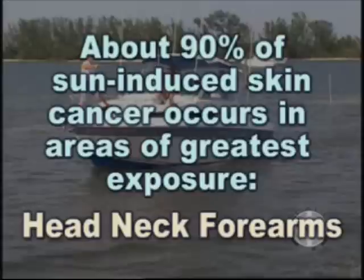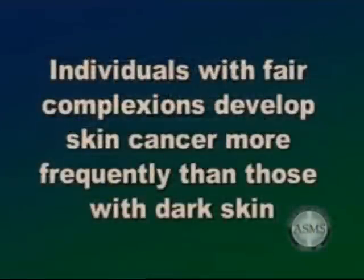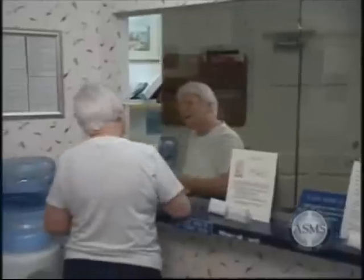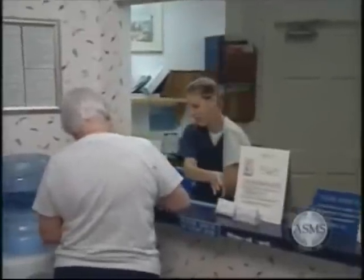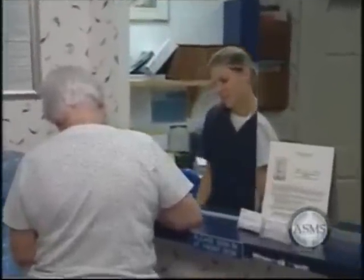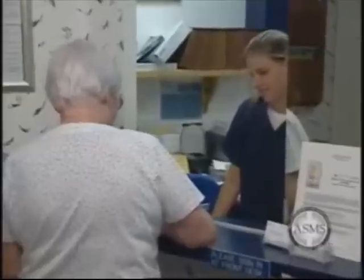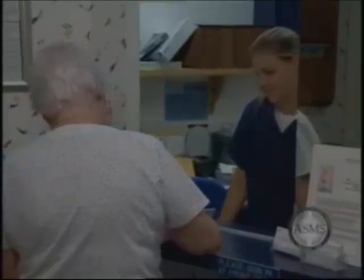One severe sunburn can increase your risk of skin cancer by as much as 50 percent. Sun damage to the skin accumulates over many years of exposure, and about 90 percent of sun-induced skin cancer occurs in the areas of greatest exposure — namely the head, neck, and forearms. People with a family history of skin cancer are at an increased risk, and individuals with fair complexions develop skin cancer more frequently than those with dark skin. If you have had a skin cancer, you are likely to develop another in the years ahead. To minimize your problems with skin cancer, you should be evaluated frequently for new suspicious lesions on your skin.